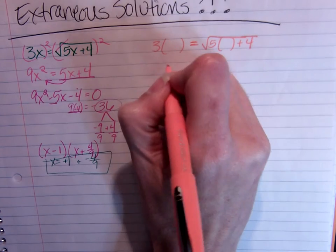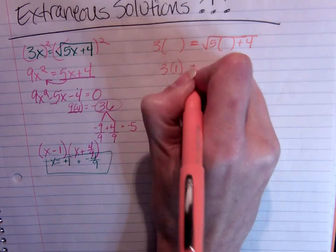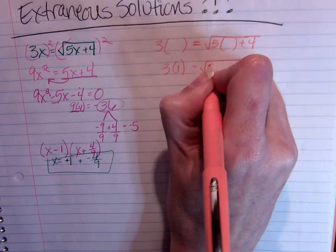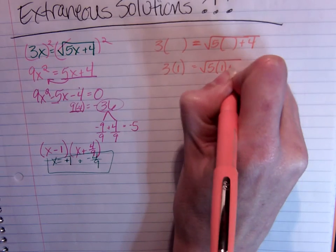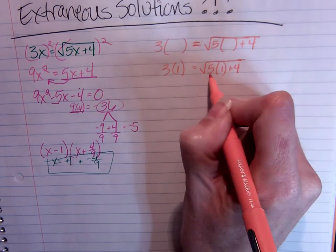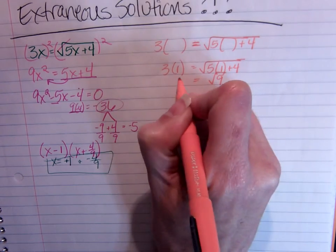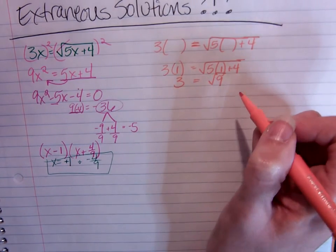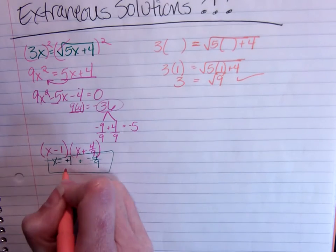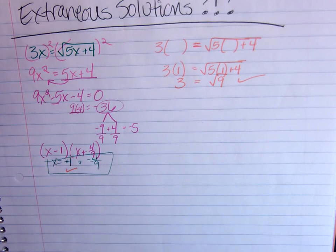So let's think through it. Plug in my positive 1. So 3 times 1 equals the square root of 5 times 1 plus 4. 5 times 1 is 5 plus 4 is 9. The square root of 9 equals 3. Is that a reasonable and true statement? Yes, it is. My positive 1 is okay.